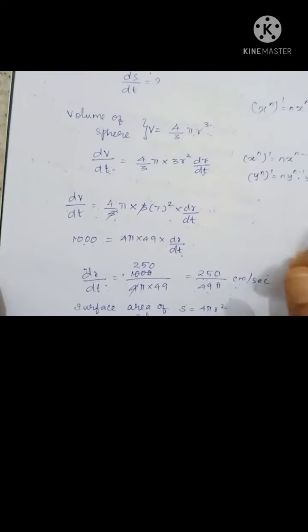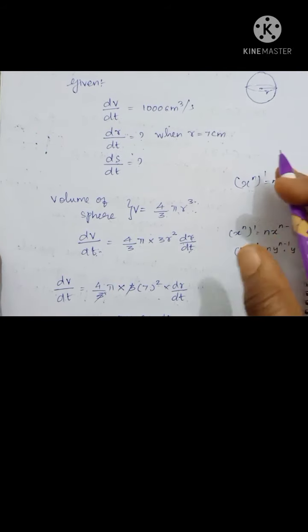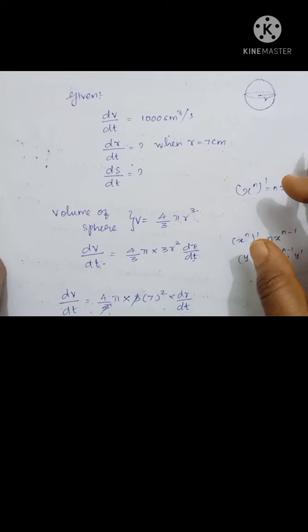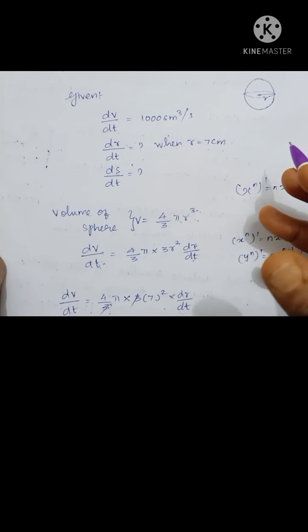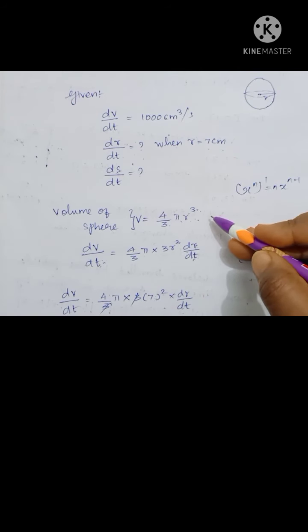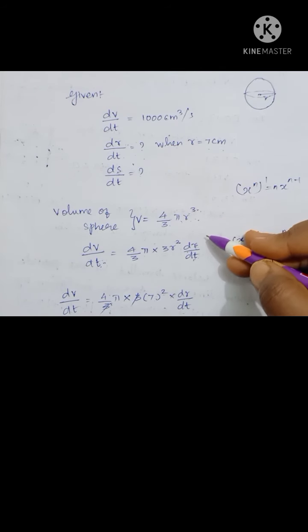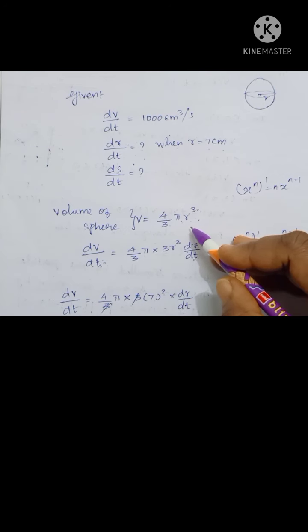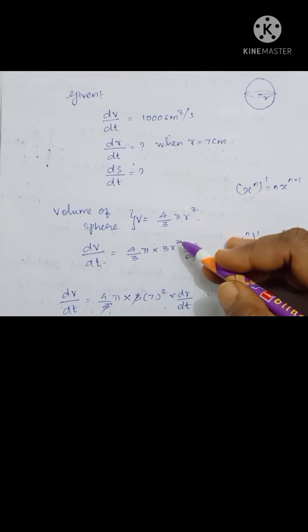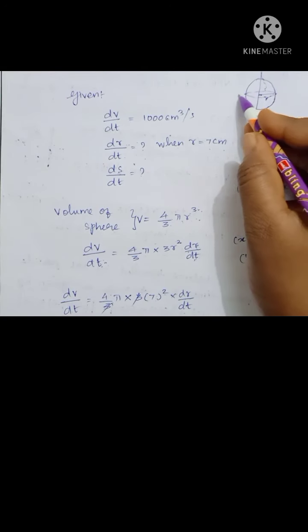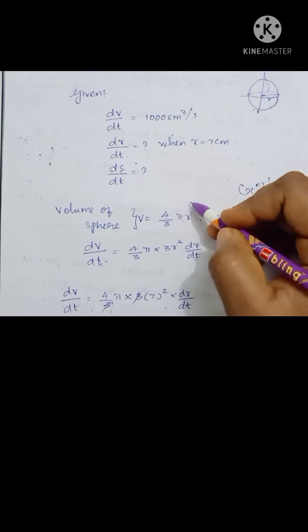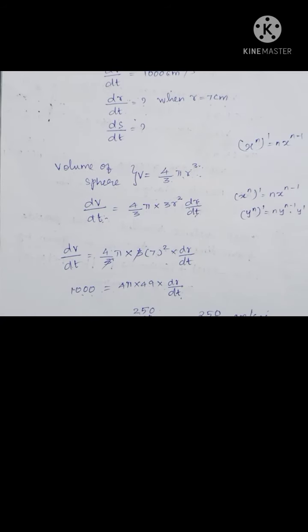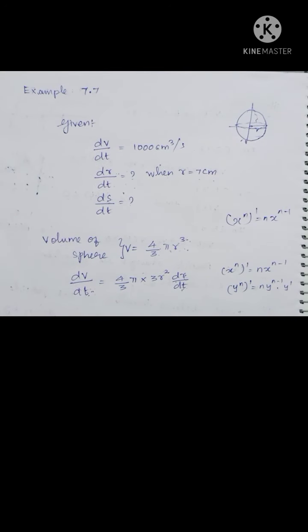This is the book answer. If you understand the word problem, it will be very easy. The rate of change with respect to time: increase is positive and decrease is negative. Remember the volume of the sphere formula 4/3 πR³ and the surface area 4πR². If you enjoyed this video, please like, share, and subscribe. If you have any doubts, please leave them in the comments section. Thanks for watching this video.